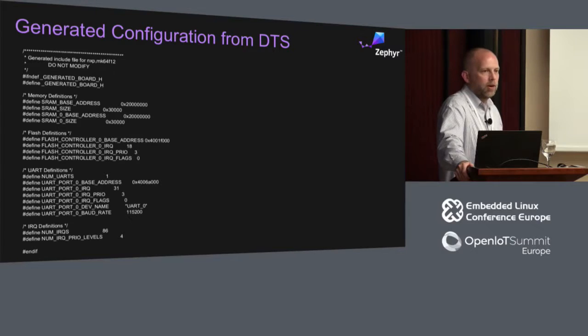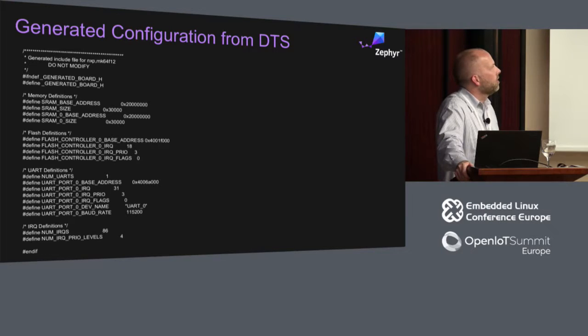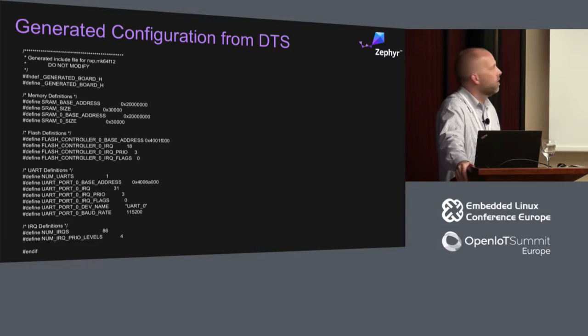The first part was just using the simplest information in the system, and one of those things is the SRAM base address — because without that, nothing works. That was one of the first things I did. Now I've just got to plug it in. I'm at a point where I can add my generic board include file and strip out the information we don't need, and then it'll work.